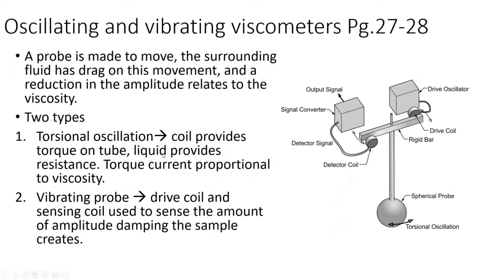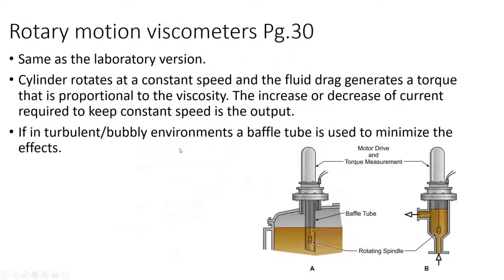The rotary motion viscometer is similar to the laboratory version: a cylinder or paddle rotates at constant speed, and the drag generated by the fluid creates a torque requirement proportional to viscosity. The increase or decrease in current required to keep constant speed is proportional to viscosity and is the output. If installed in turbulent or bubbly environments, a baffle tube is used to minimize effects — bubbles or turbulence cause a false 'thinness' reading.